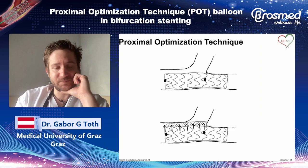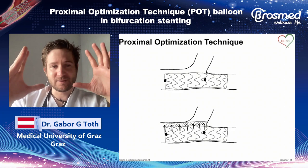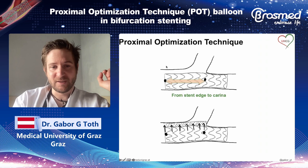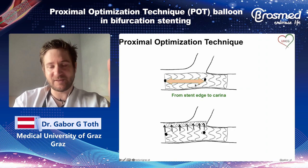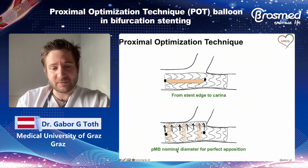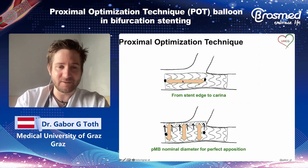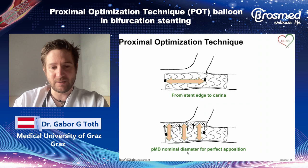When you put the stent according to the distal daughter branch diameter and consider proximal optimization, you have to keep in mind two dimensions for the proximal optimization balloon. First, the length — from the carina to the proximal stent edge — so you need enough stent length fitting your proximal optimization balloon to ensure the balloon is inside the stent. Second, the diameter of the proximal main branch to achieve perfect apposition.